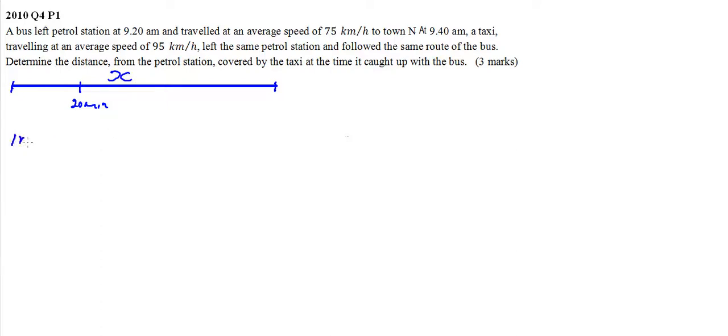In 20 minutes, the bus had covered a distance. Distance equals speed multiplied by time. The speed of the bus was 75 kilometers per hour, multiply by time which is 20 divided by 60 to make it hours.